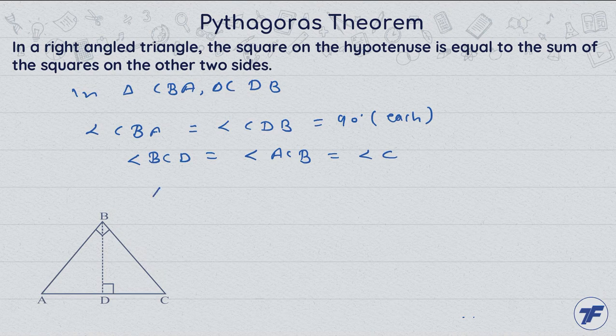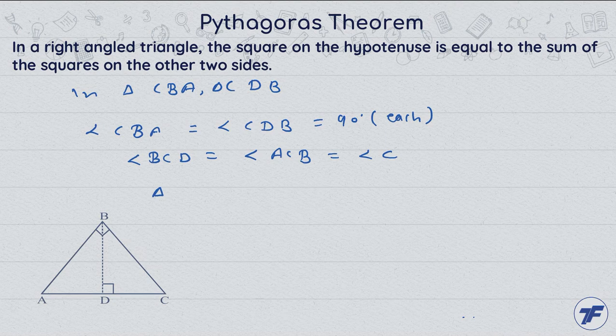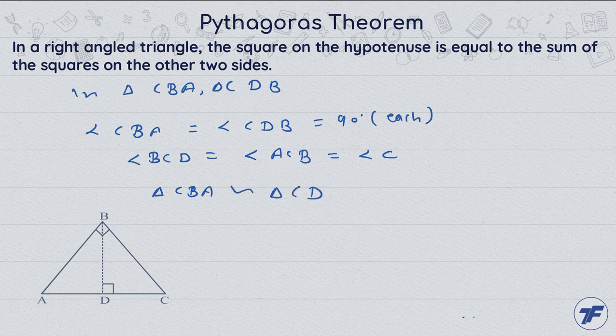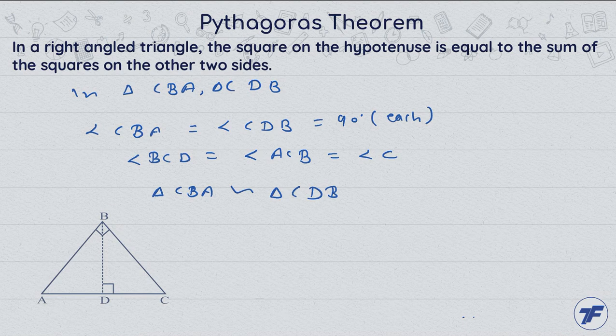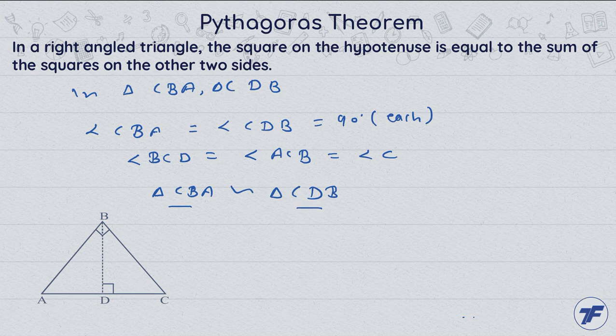Now we can say by angle-angle criteria, triangle CBA similar to triangle CDB. Now if these triangles are similar, their corresponding sides ratio will be same.